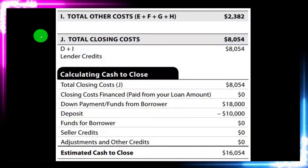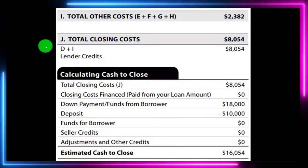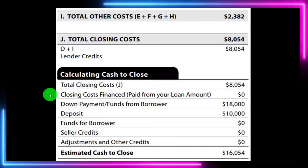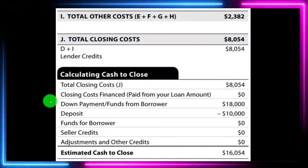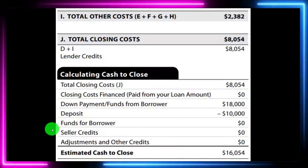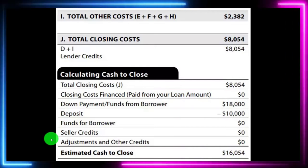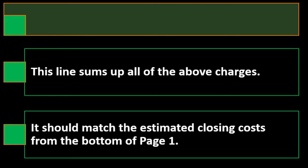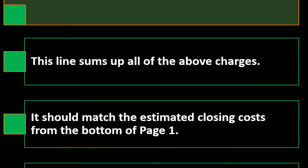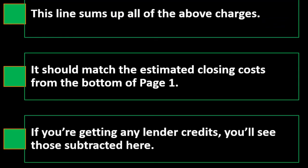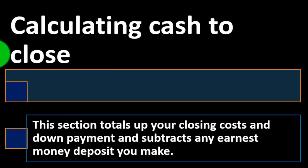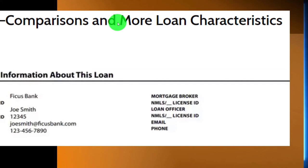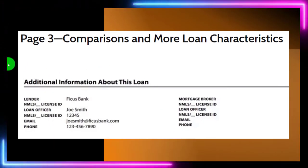Section I totals all other costs. Section J gives the total closing costs, which is D and I added together, minus any lender credits. The calculating cash to close section shows: total closing costs, closing costs financed from your loan amount, down payment and funds from borrower deposit, any seller credits, and adjustments and other credits — resulting in the estimated cash to close. This total should match the estimated closing costs from the bottom of page one.